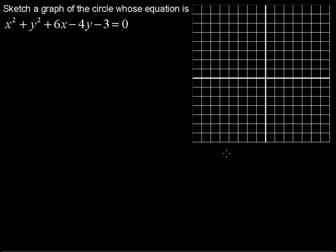Sketch a graph of the circle whose equation is x squared plus y squared plus 6x minus 4y minus 3 equals 0. This is the polynomial form of the circle equation.